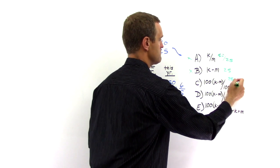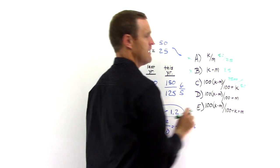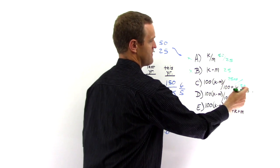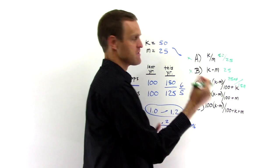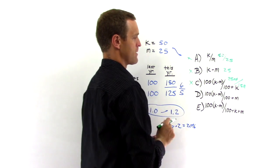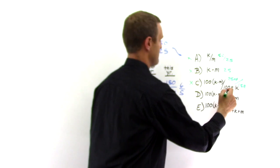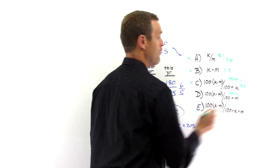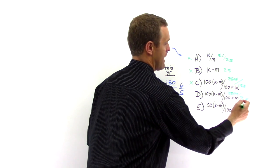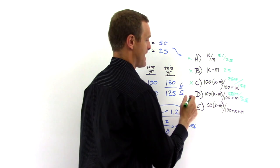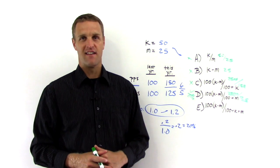Because 15 goes into 25 not quite two times. So that's not going to equal 20%, whereas answer choice D, 100 times 25, so 2,500, over 100 plus M is 125. Yeah, now 125 does go into 250 two times exactly, so that will equal 20%. Answer choice D is correct.